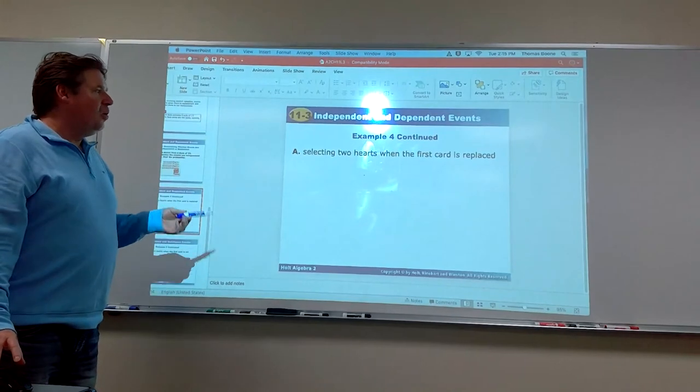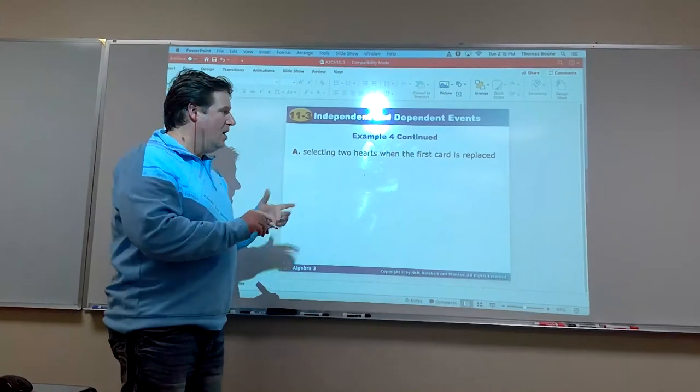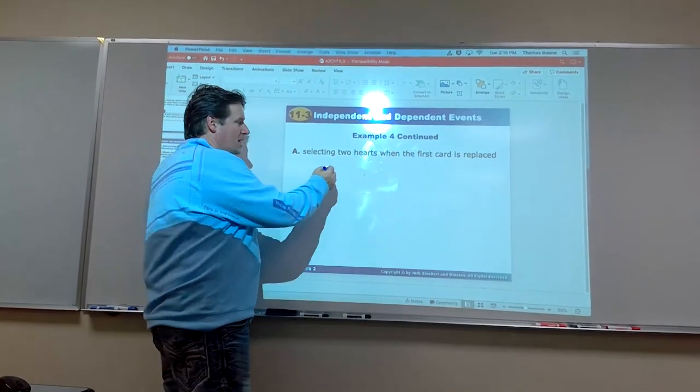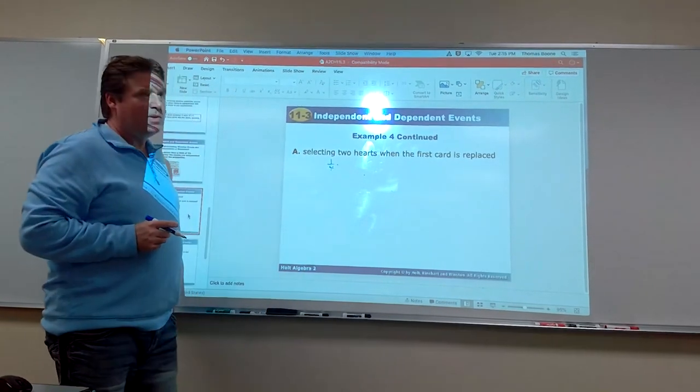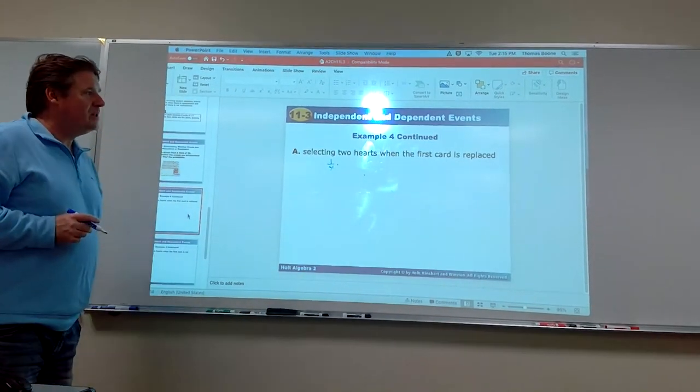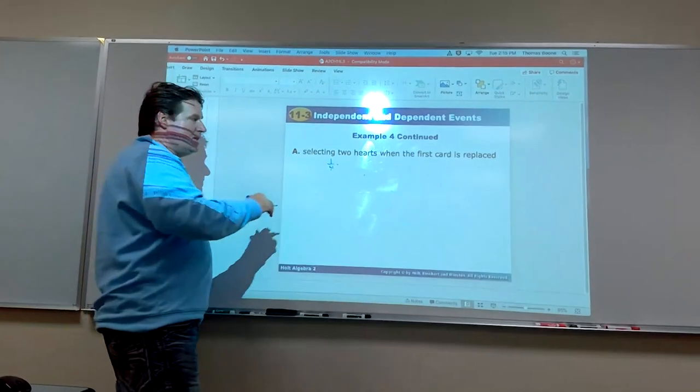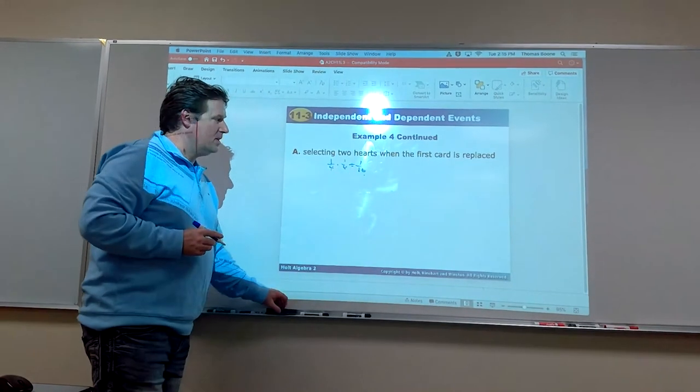Refer back to this slide if you're not familiar with the deck of cards. Alright, what's the probability of selecting two hearts when the first card is replaced? Well hearts, you know, it's basically a 1 out of 4 chance of getting a heart, right? 1 out of 4, because you have four suits. Alright. So what's the probability of getting it on the second time? Well if you replace it, it's still the same. It's still 1 out of 4. So we get a 1 out of 16 chance of replacing that.